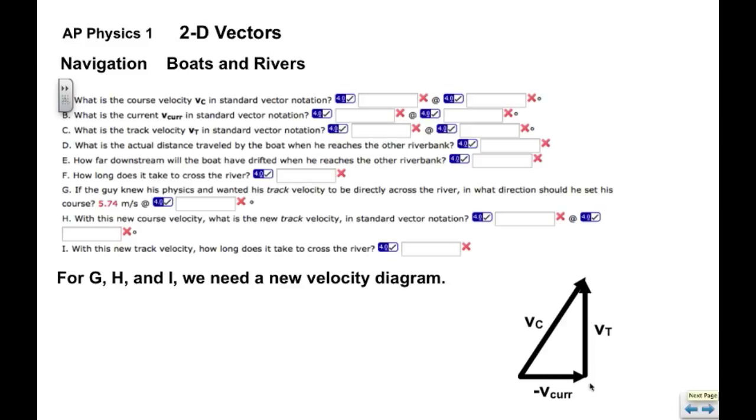We do need a new velocity diagram where again we're rearranging the navigation equation to say that track plus negative current equals course. So that's what we're saying here. We have negative current and track equals the course.